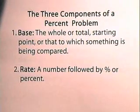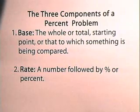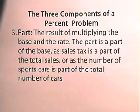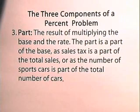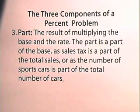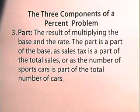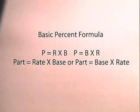Let's begin by looking at the three components of a percent problem. The first component is the base, which is the whole or total — the starting point, or that to which something is being compared. The second component is the rate, which is a number followed by a percent sign or the word percent. The third component is part, which is the result of multiplying the base and the rate. The part is a part of the base, as sales tax is a part of total sales, or as the number of sports cars is part of the total number of cars. The basic percent formula says that part is equal to rate times base.